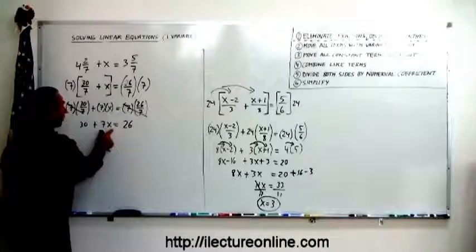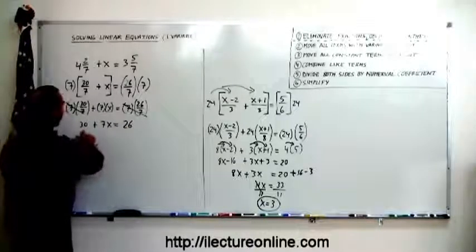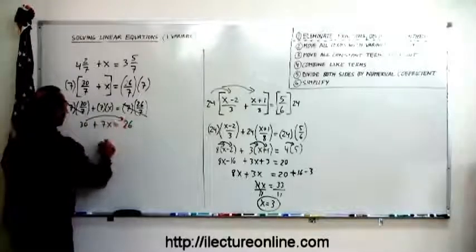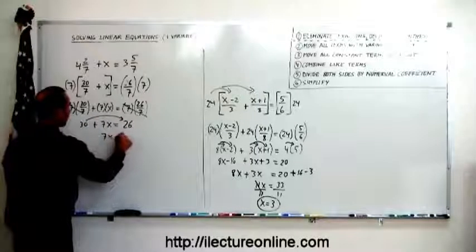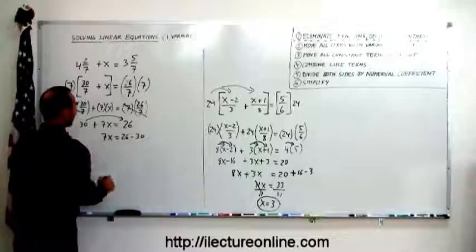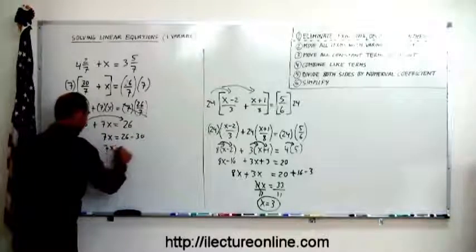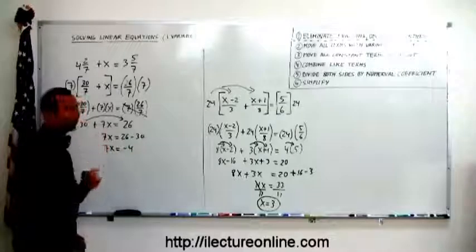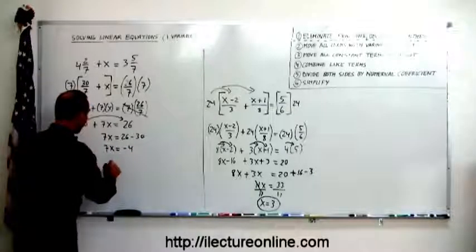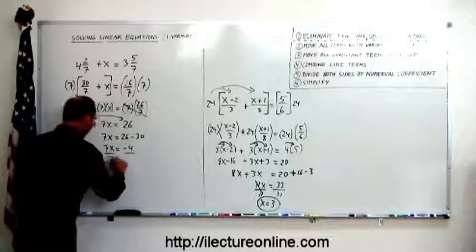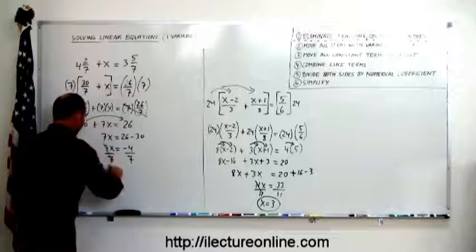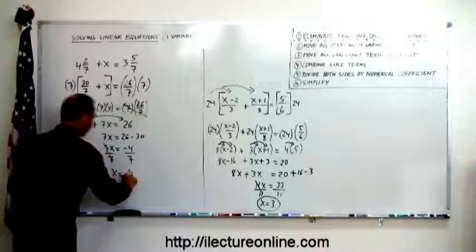The variable is already on the left side, so you leave it there, then you move the constant term to the other side. We have 7x equals 26 minus 30, then it says combine like terms, so 7x equals minus 4, then divide both sides of the equation by the numerical coefficient, so divide by 7, divide by 7, that cancels out, x equals minus 4 over 7.